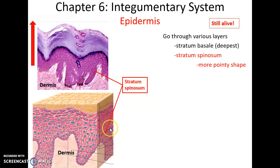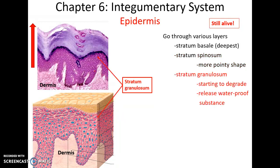After the stratum basale comes the stratum spinosum. This is about 8 to 10 layers of cells. In the stratum spinosum layer, the cells are spiny-shaped because they are forming tight connections with their neighboring cells via desmosomes — hence the name stratum spinosum, from 'spiny.' The cells here are still alive.